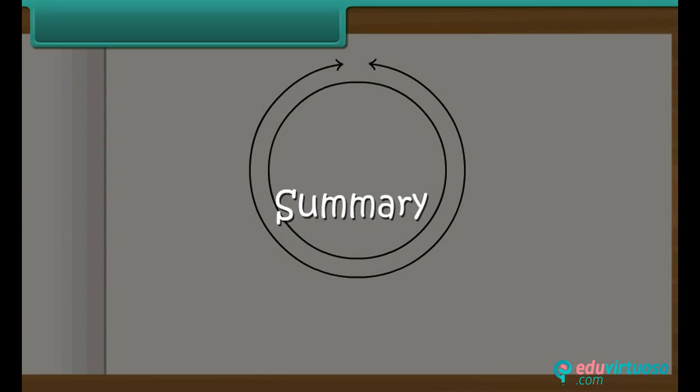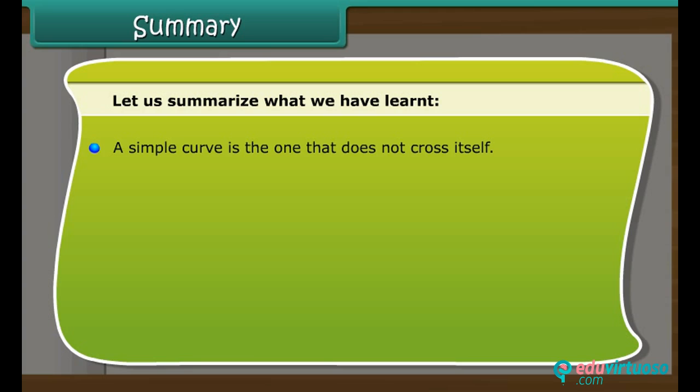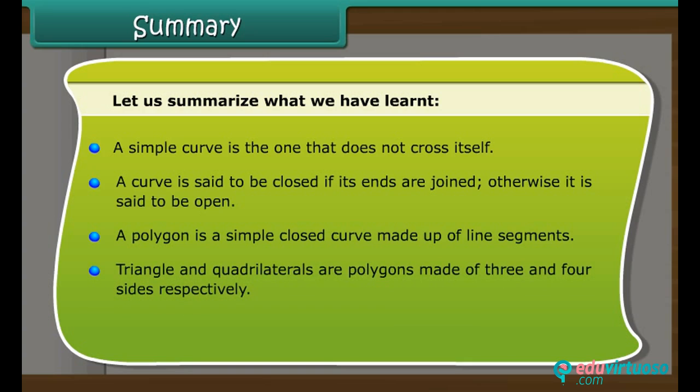Summary. Let us summarize what we have learned. A simple curve is the one that does not cross itself. A curve is said to be closed if its ends are joined. Otherwise, it is said to be open. A polygon is a simple closed curve made up of line segments. Triangle and quadrilaterals are polygons made of three and four sides respectively. A circle is the path of a point moving at the same distance from a fixed center.